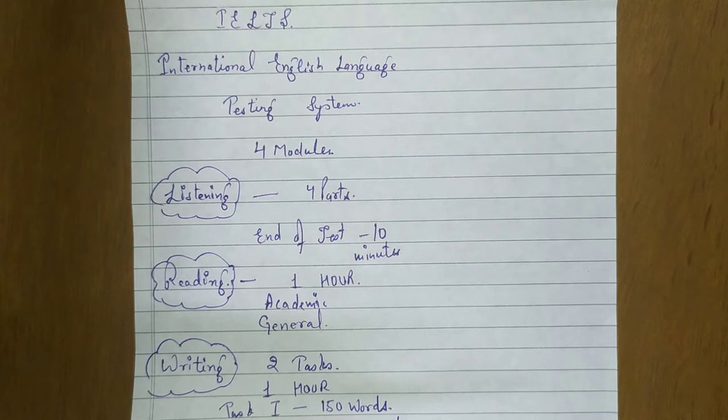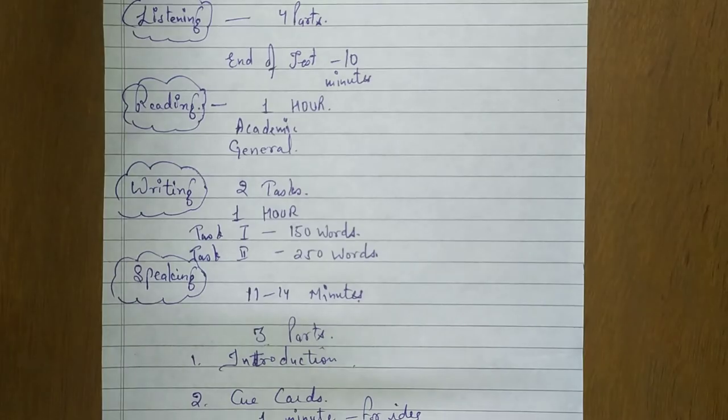IELTS consists of four modules: listening, reading, writing, and speaking. Listening consists of four parts and at the end of the test you have given 10 minutes.